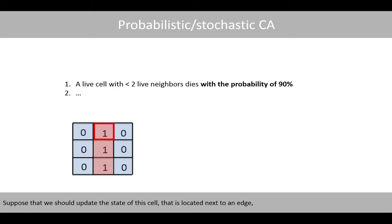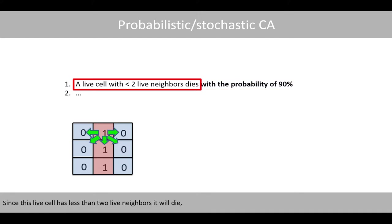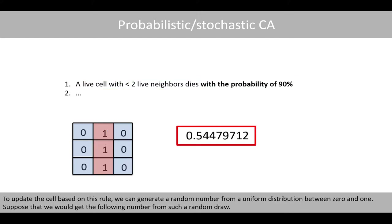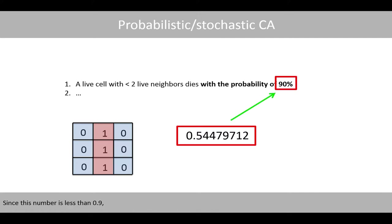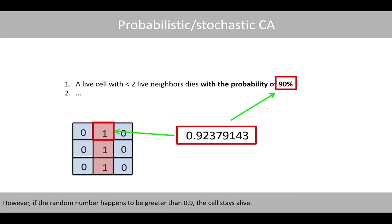Suppose that we should update the state of a cell located next to an edge based on the following rule. Since this cell has less than two live neighbors, it will die with a probability of 90%. To update the cell based on this rule, we generate a random number from a uniform distribution between 0 and 1. Since this number is less than 0.9, this cell would change its state from 1 to 0. However, if the random number happens to be greater than 0.9, the cell stays alive.